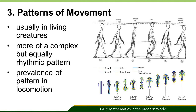The next is patterns of movement. In the human walk, the feet strike the ground in a regular rhythm — the left-right, left-right rhythm. When a horse, a four-legged creature walks, there is a more complex but equally rhythmic pattern. This prevalence of pattern in locomotion extends to the scuttling of insects, the flight of birds, the pulsation of jellyfish, and also the wave-like movements of fish, worms, and snakes.